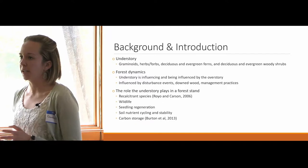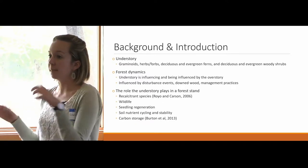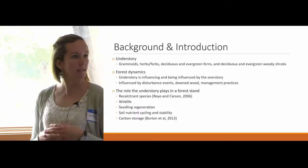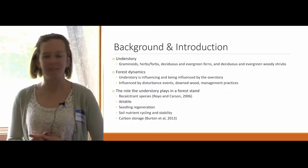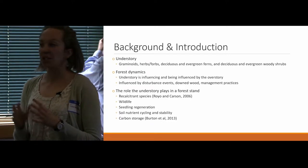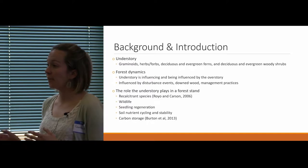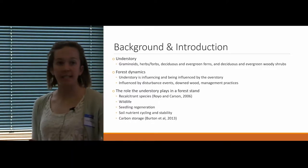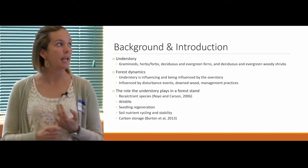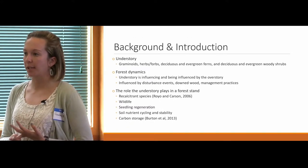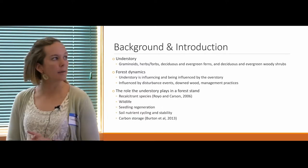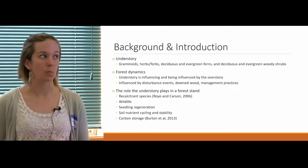Just to give a little background before we get into the meat of the experiment itself, I've divided the understory into six different categories to better understand the change in understory development and vegetation over time: graminoids — so grasses, sedges and rushes — herbs and forbs, both deciduous and evergreen ferns separated, as well as deciduous and evergreen woody shrubs separated out. I'll be referring to this further on in the presentation.